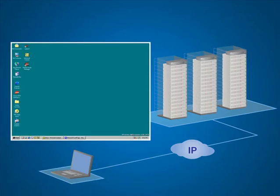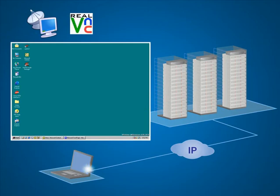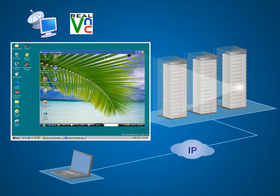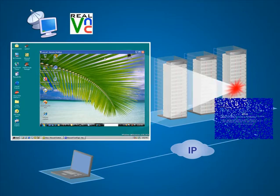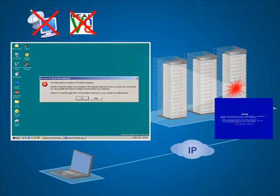Most rely upon software tools like RDP and VNC to provide remote server access, and these can be very effective when operating systems are healthy. But when the blue screen of death occurs, only an agentless hardware solution can come to the rescue.